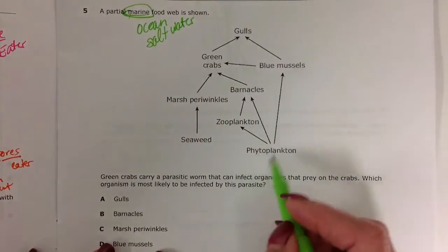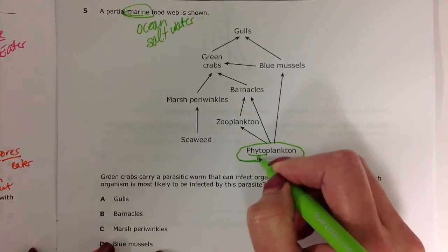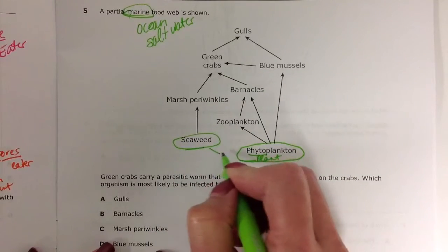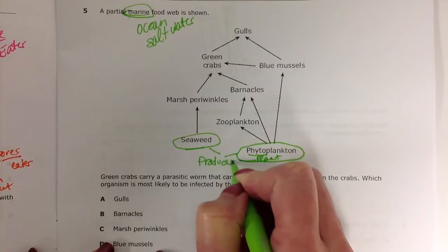So we have our phytoplankton, which is our, phyto means plant. So obviously this is our producer. So it's seaweed. So these are both producers.